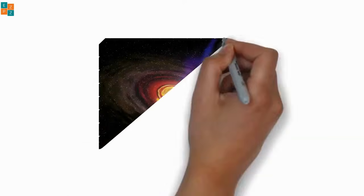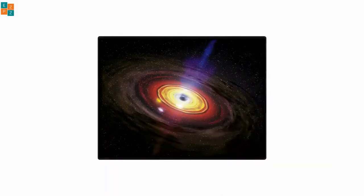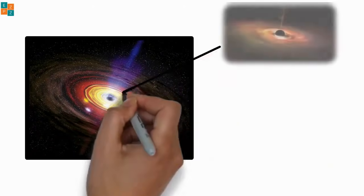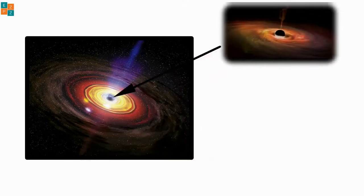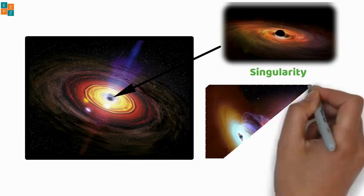Black holes are formed when massive stars run out of fuel and collapse under their own gravity. At the center of a black hole, there is a point of infinite density called a singularity. The matter is squeezed into a tiny space.